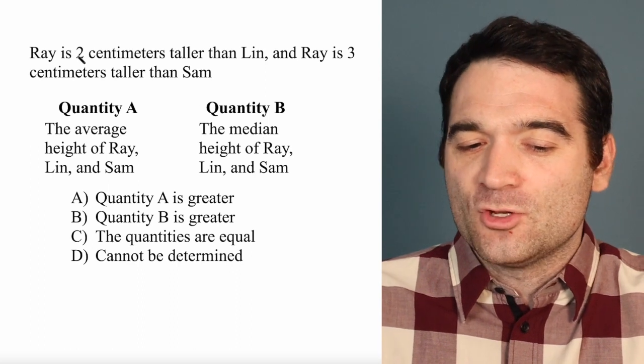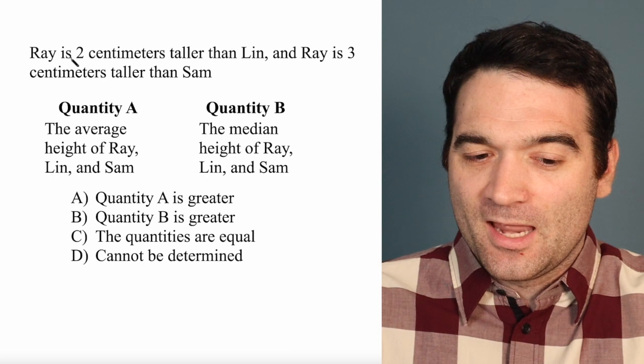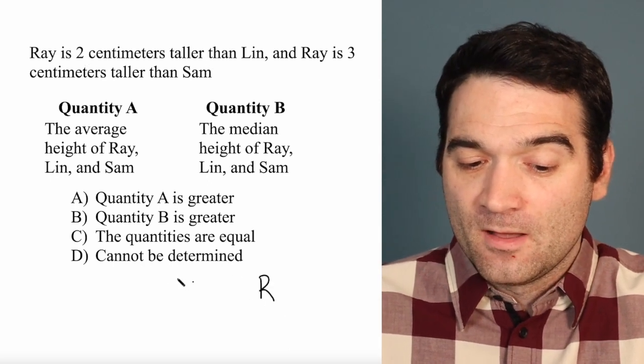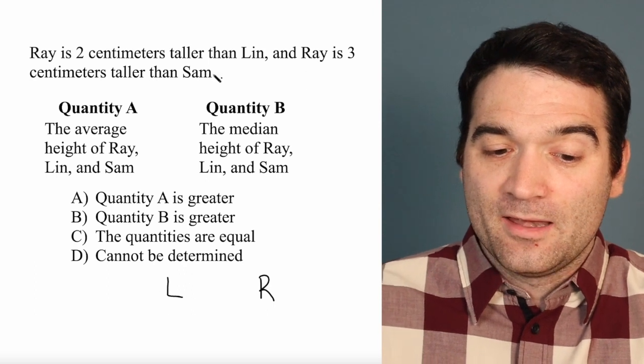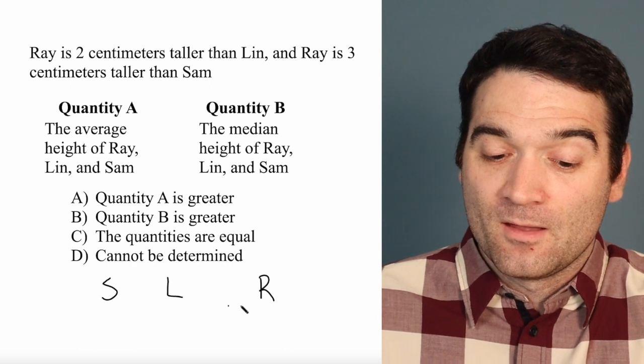So if I were to arrange these people in order, I have Ray, who's the tallest, and he's 2 centimeters taller than Lin. So I'm going to put Ray up here. I'll put Lin right here. It's the middle. And Ray is 3 centimeters taller than Sam, so Sam is lower than Lin.